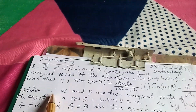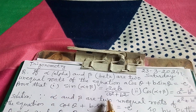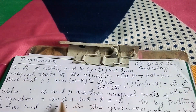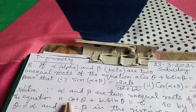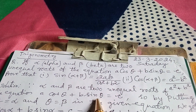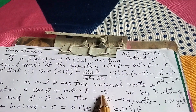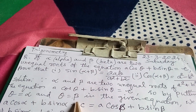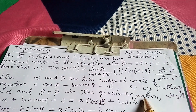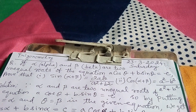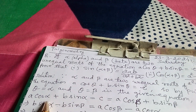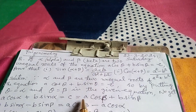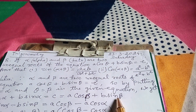The solution is: since alpha and beta are two unequal roots of the equation a·cosθ + b·sinθ = c, by putting θ = α and θ = β in the given equation, we get a·cosα + b·sinα = c = a·cosβ + b·sinβ.